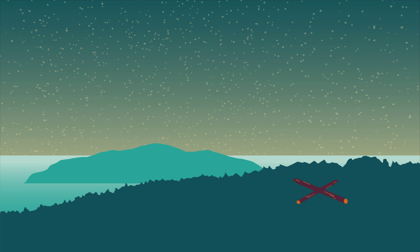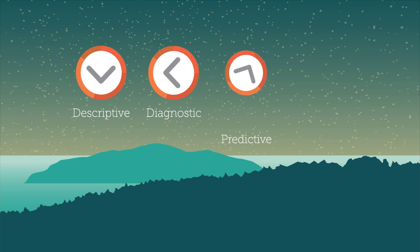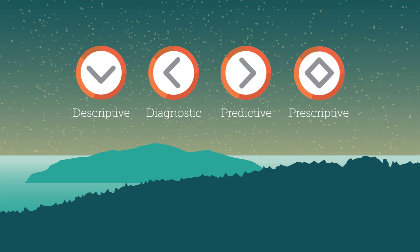But there are actually four distinct types of data analytics that help agencies answer different questions. The first is descriptive analytics, and it answers the question: what happened? Then there are diagnostic analytics that answer: why did it happen? Predictive analytics answer the question of what will happen? And finally, prescriptive analytics answer: how can we make it happen?